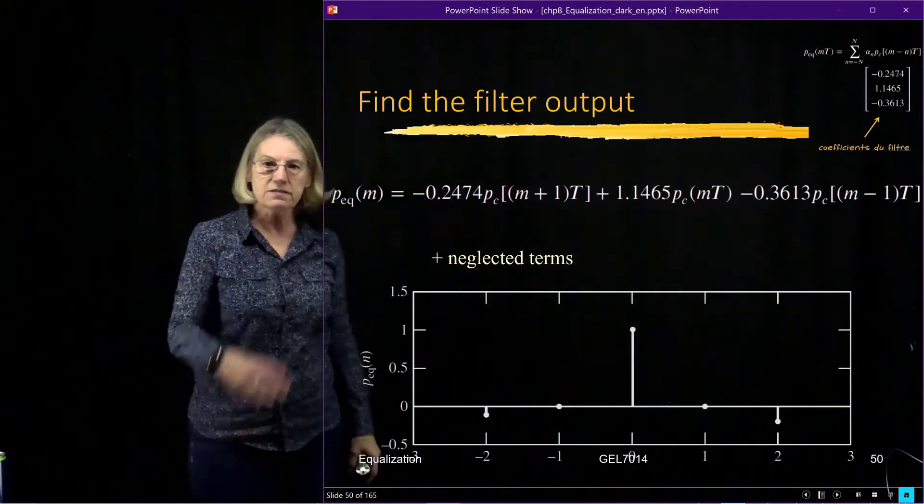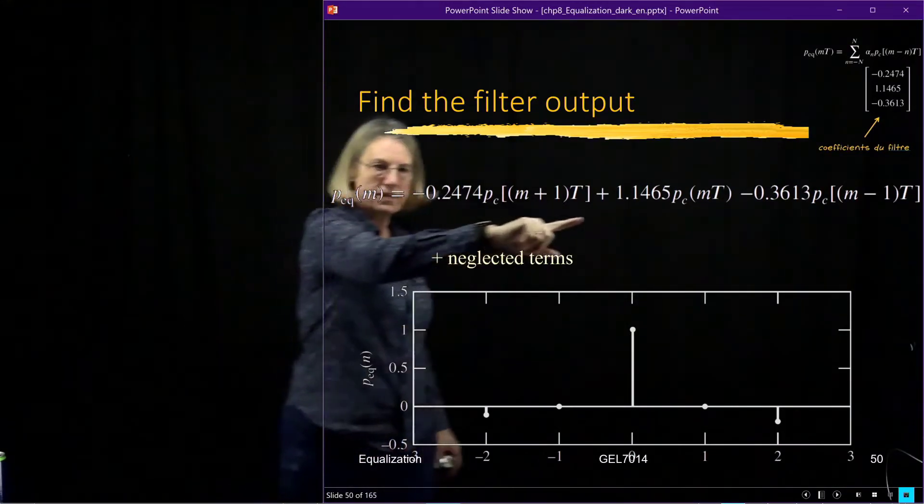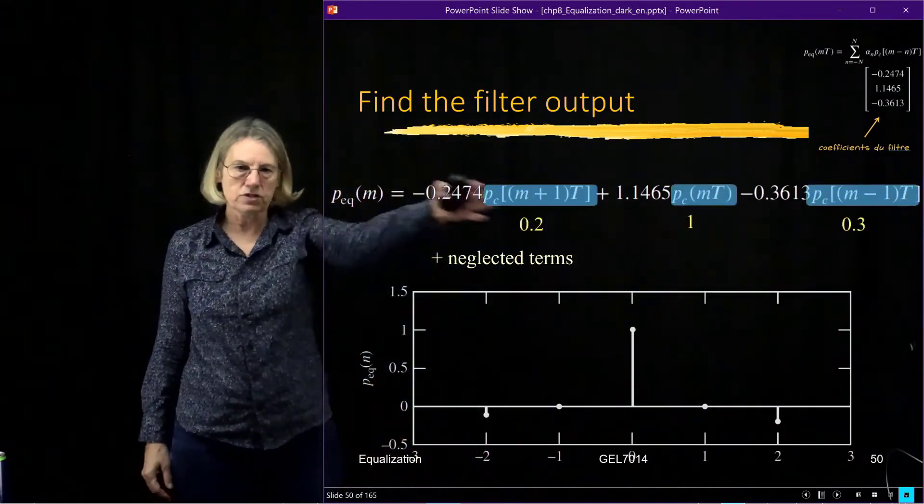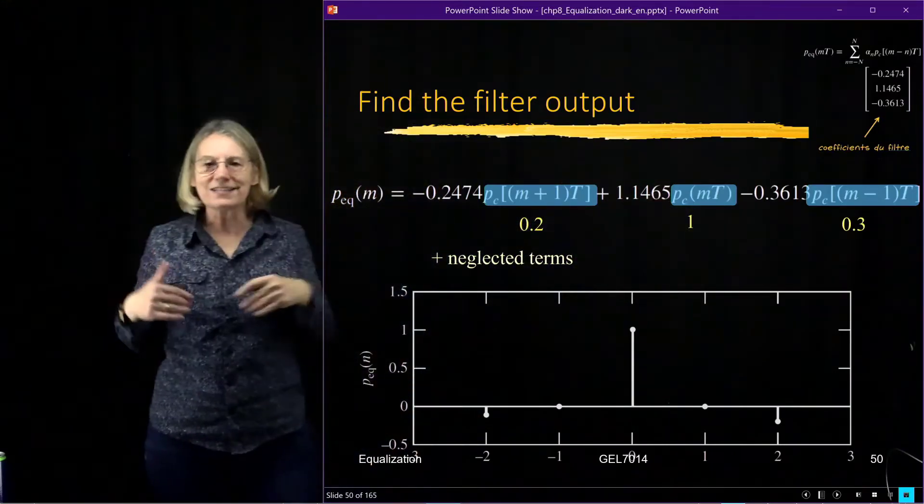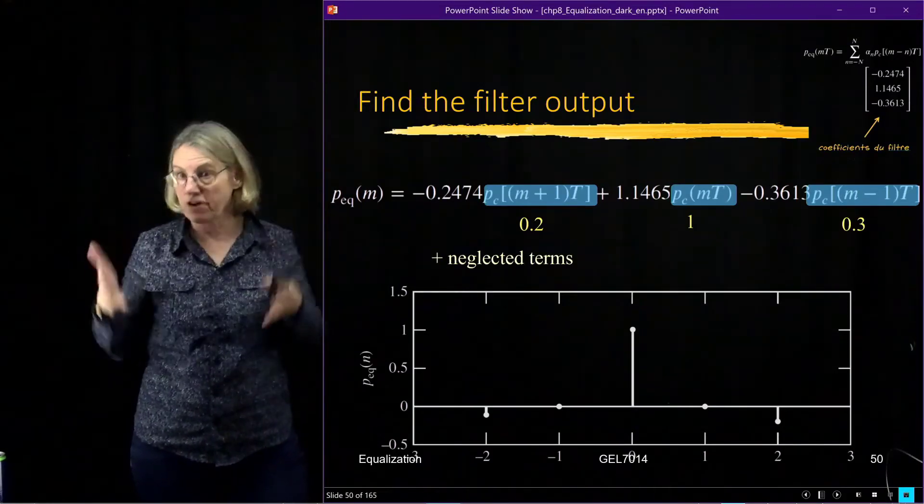So here it is, the equalizer output where I've put the coefficients of the terms. Now of course I can plug in the values for the channel. So what will I get in the end? Do I really get my nice delta function?